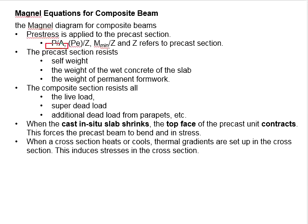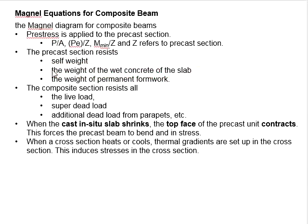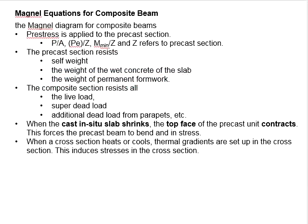Second, the pre-cast section is used to resist its own self-weight, the weight of the wet concrete of the slab, and also the weight of the permanent formworks. Next, the composite section will be resisting the live load, the super dead load, and also the additional dead load of the parapets and other permanent fixtures.